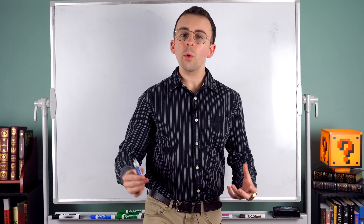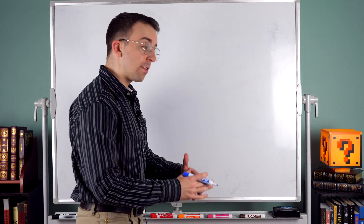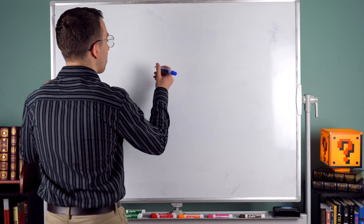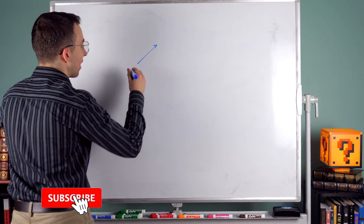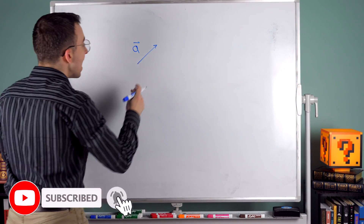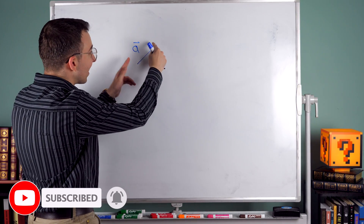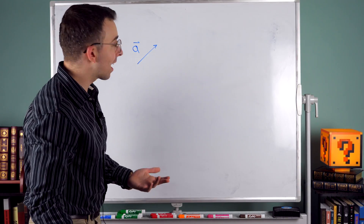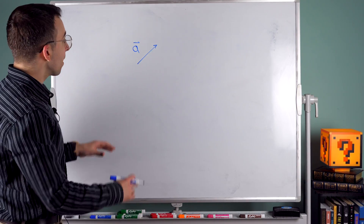Hi there. We know how vectors have magnitudes and directions. For example, this could be a vector we call A. It has a magnitude given by its length and it has a direction — you can see it's pointing up this way.